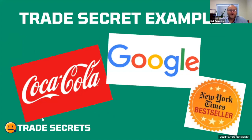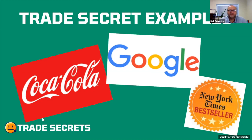Some trade secret examples: Coca-Cola is probably the most famous — the formula has traditionally been held in a vault and only a handful of people know it. It's been a trade secret since day one, though someone reportedly reverse-engineered it a few years ago and found about 20 ingredients. Google's algorithm for how they rank things is a trade secret — they didn't patent it, which was probably a good decision since a patent only lasts 20 years. The New York Times bestseller list also has a formula for ranking books that is kept as a trade secret. They don't disclose how that happens — it's just a secret.